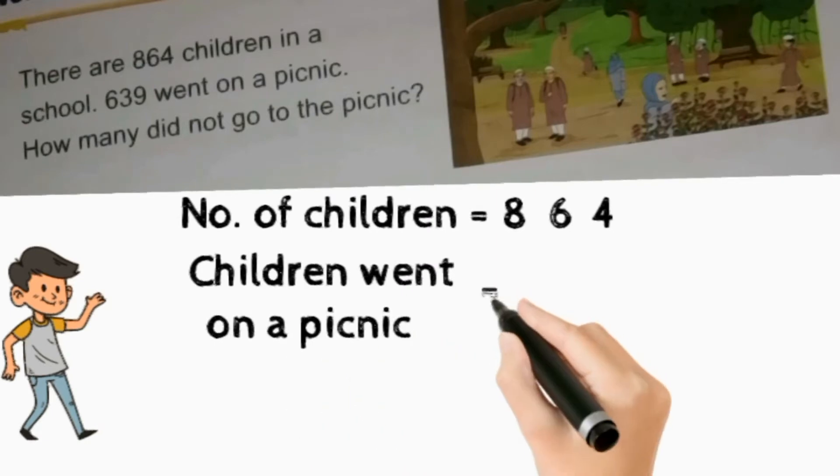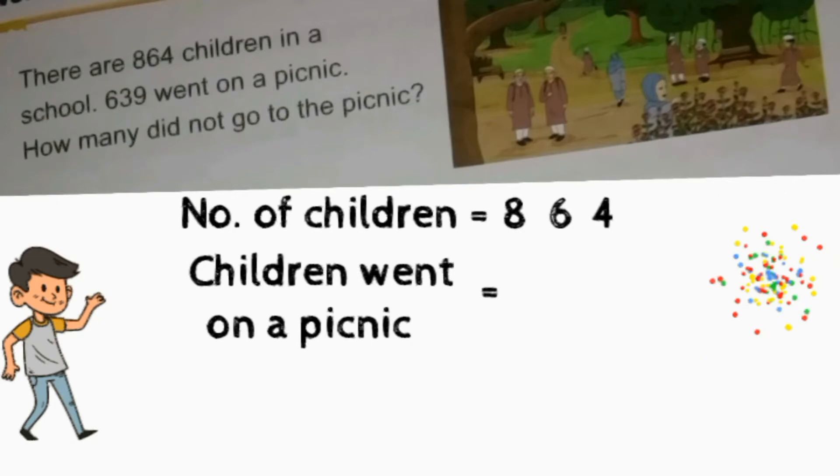A statement: Number of children equals 864. Children went on a picnic—how much? You see in that question, how many children went on a picnic? 639. So at last, what we write: children left is equal to...